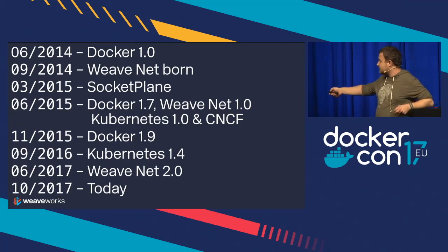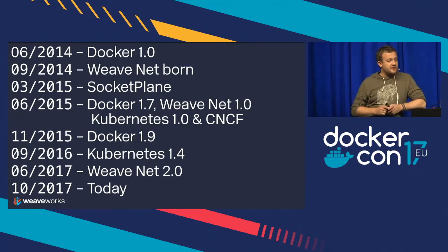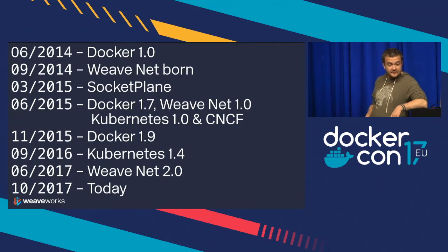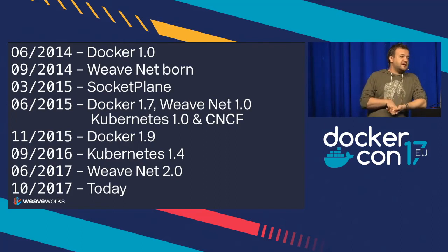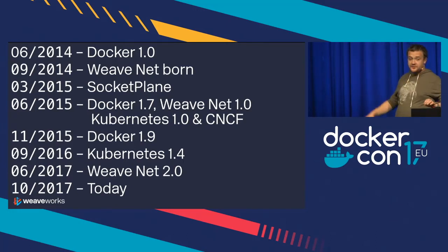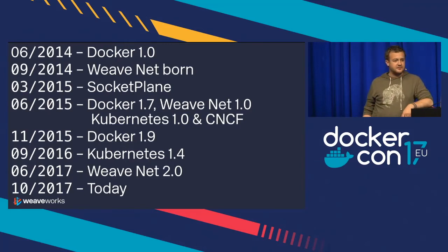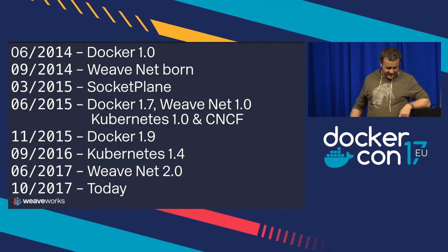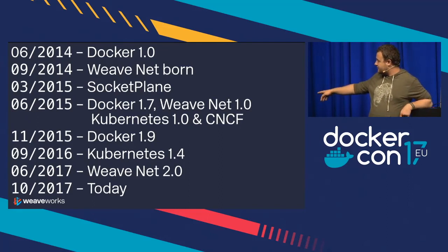Kubernetes 1.4 was significant because that's when CNI, a CNCF project, became more stable. Weaveworks did a significant amount of work on making the Kubernetes CNI interface work better, and WeaveNet soon went 2.0 — it's pretty mature now. Docker is at 17.03 earlier this year and 17.06, et cetera.